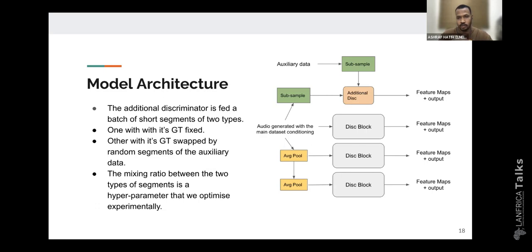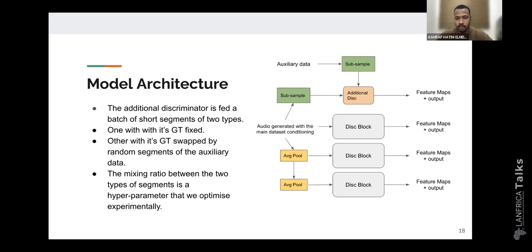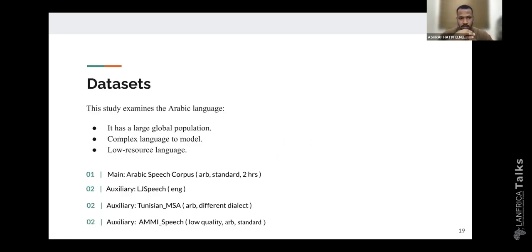By doing so, we kept the generator's task unchanged and provided much more information to the discriminator, hoping that it will produce a much stronger signal that, when flowing back to the generator, will help it to learn cleaner features — and consequently, yield a better text-to-speech system for low-resource languages.